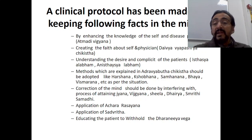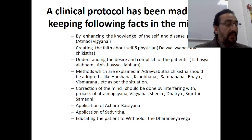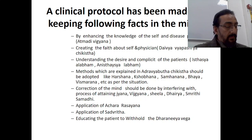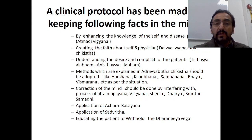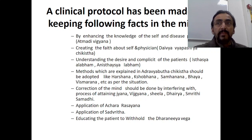Correction of the mind should be done by interfering with the process of attaining Jnana, Vijnana, Shila, Dhairiya, Smriti, and Samadhi. We also need to apply Achara Rasayana and Sadavritta because we have to correct the schedule of the child — sleep hygiene, diet hygiene, and daily routine. These all come under occupational therapy and behavioral therapy. Additionally, educating the patient to withhold Dharaniya vegas — bladder control — by withholding urine during daytime increases muscle tone.